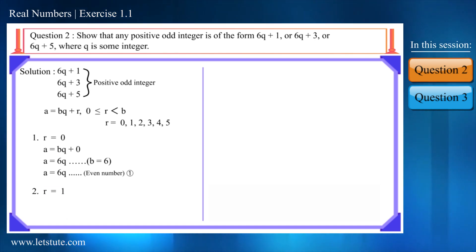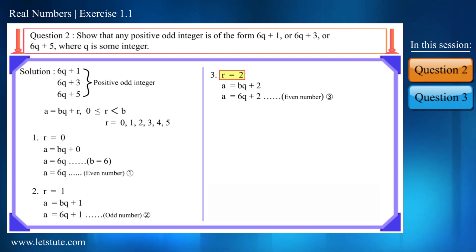This is an odd number because this number is the next number after the even number 6q. Next number 6q plus 2. This will be an even number. In this r is equal to 2.